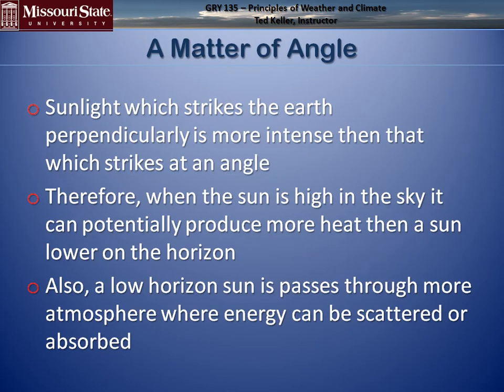The matter of angle is very important. More direct sunlight — more directly overhead — can produce more energy per square unit of area. When sunlight is lower in the sky, there's less energy, and it also has to pass through more atmosphere, where energy can be lost through scattering and absorption.